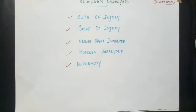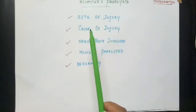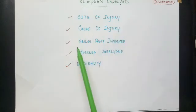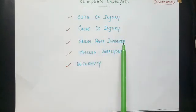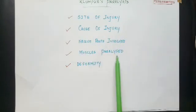In this video we will be discussing about Klumpke's paralysis — specifically the site of injury, the cause of injury, the nerve roots which are involved, the muscles paralyzed, and the deformity.